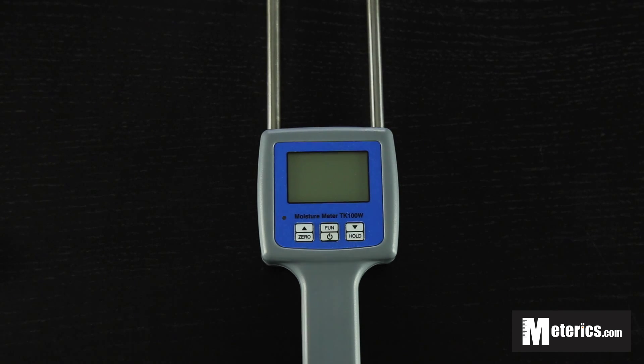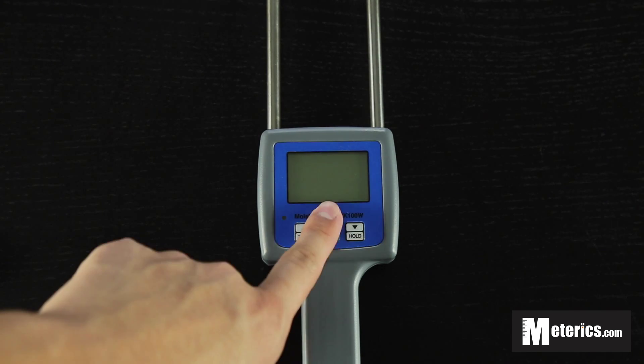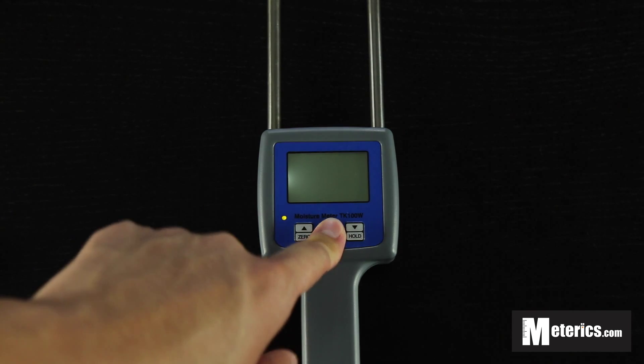So as you can see, this meter only comes with three buttons. The middle button is the on button, so let's turn that on.